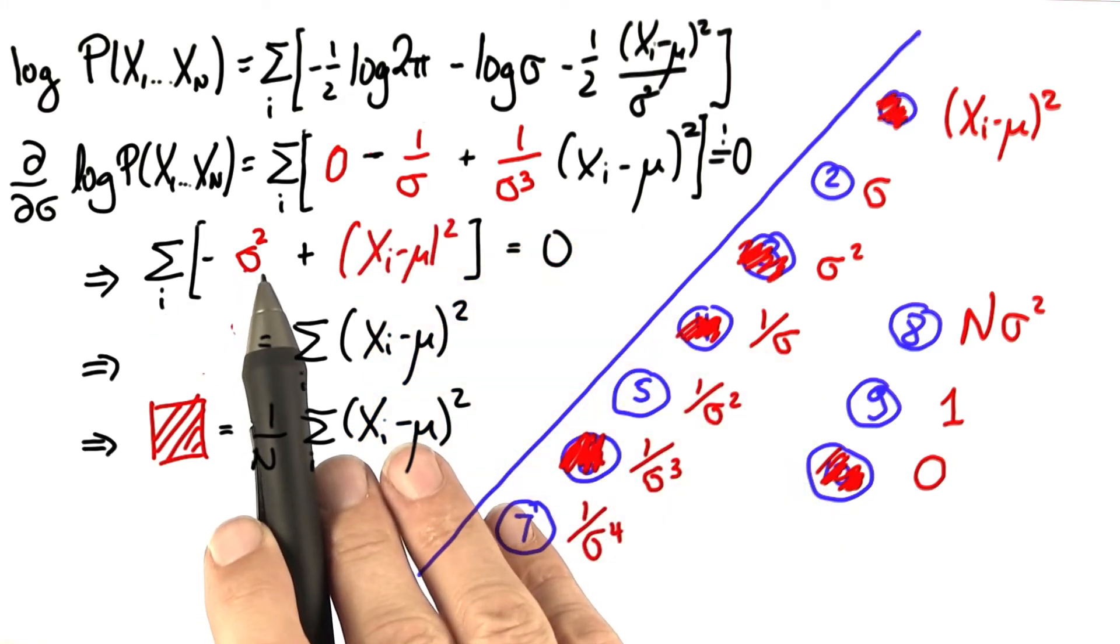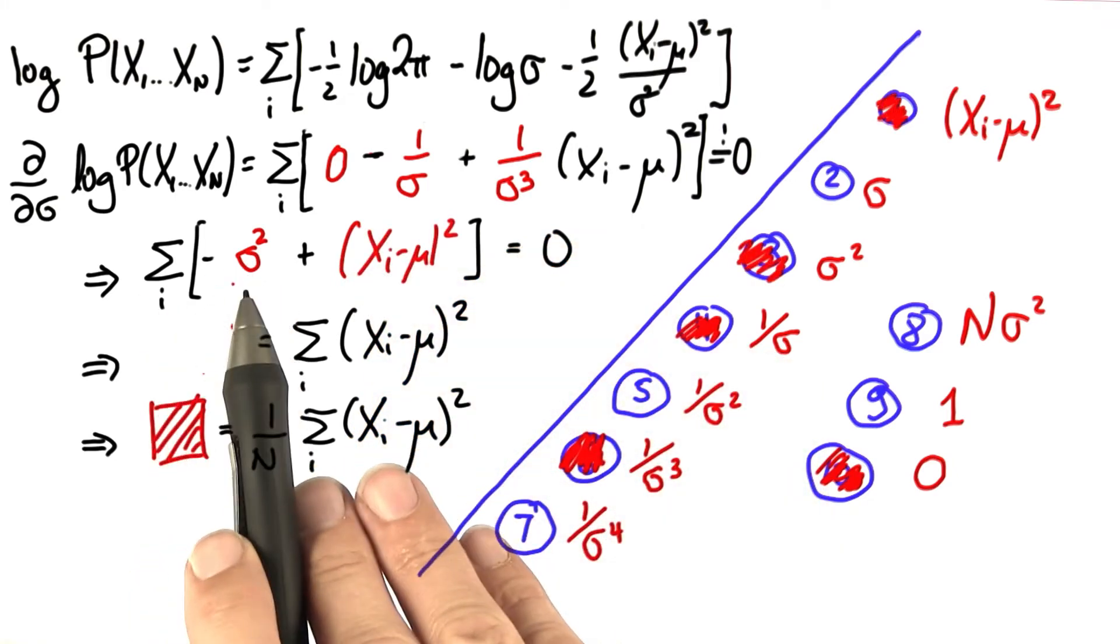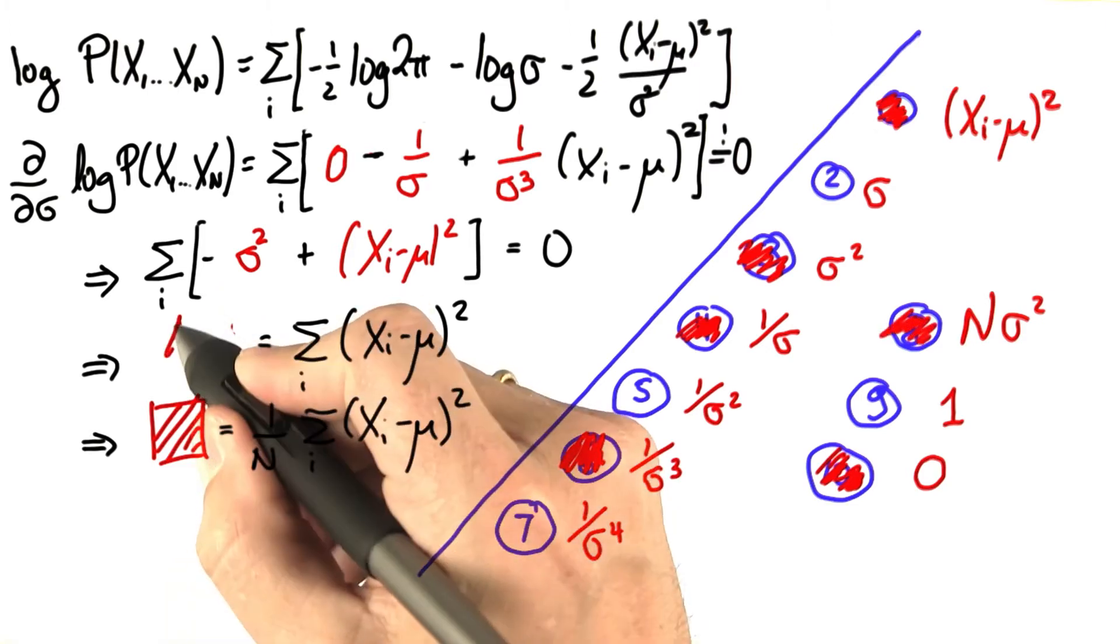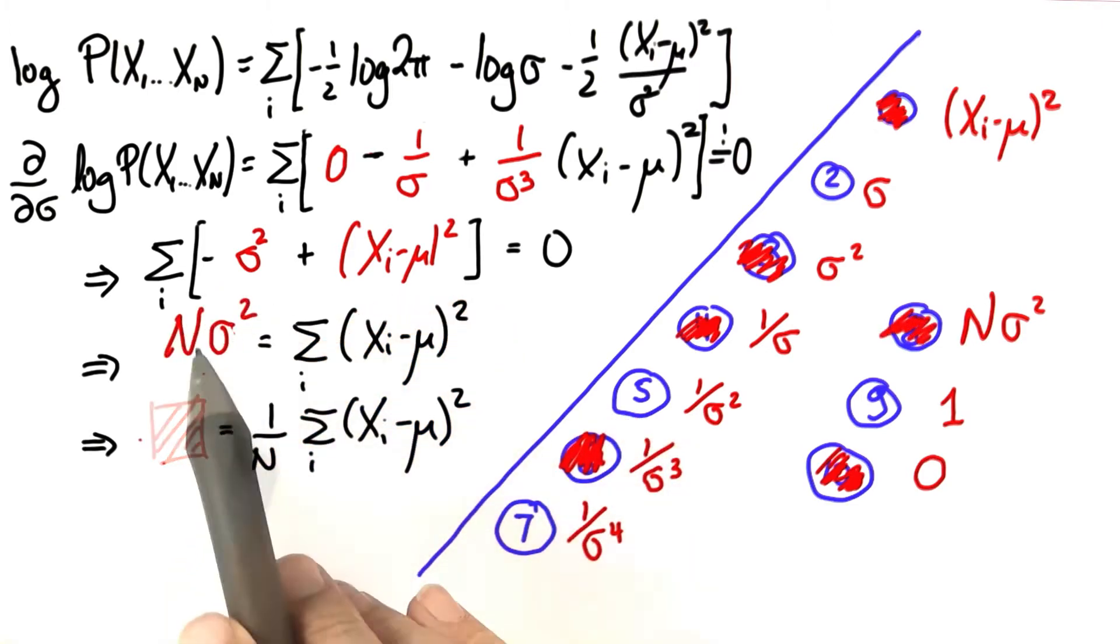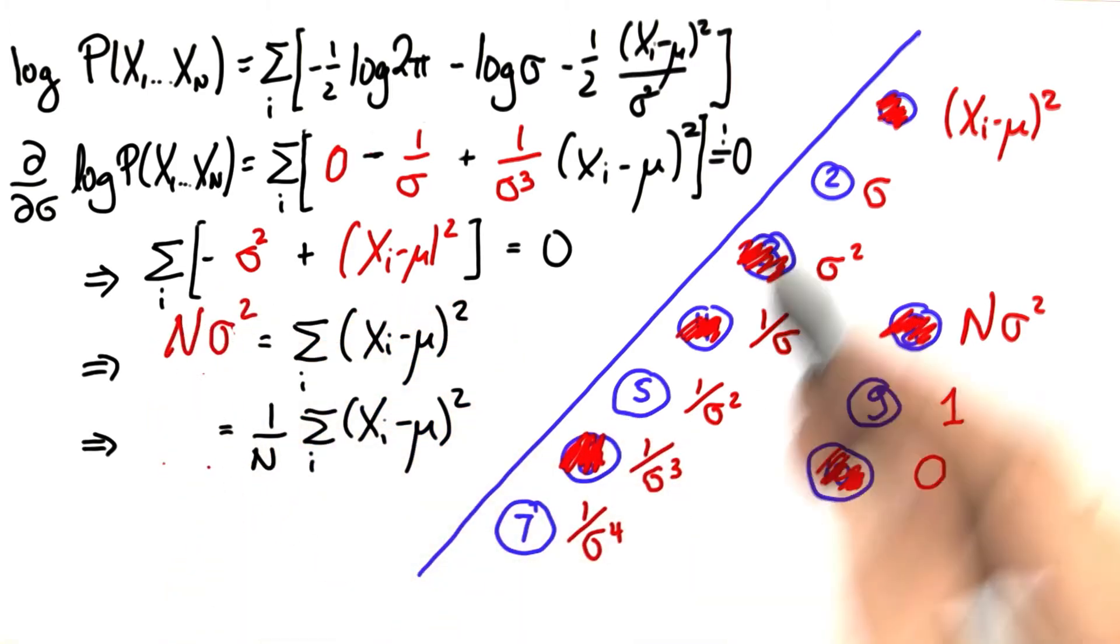Taking now the sigma square to the left side, we observe that we have n sigma squares in the sum. So we get n sigma square, and bringing n to the right gives us sigma.